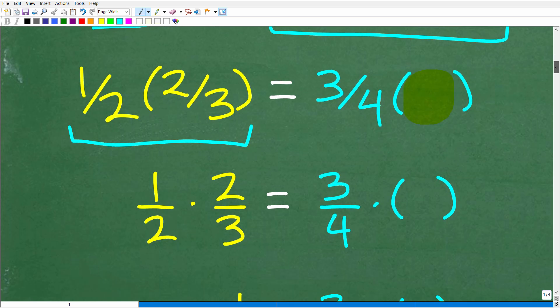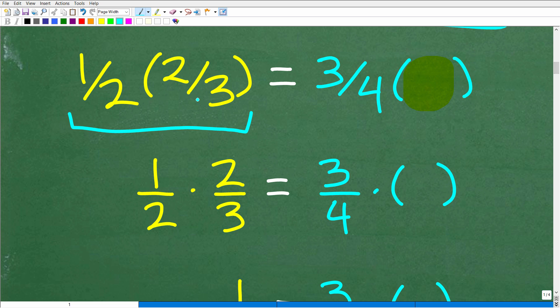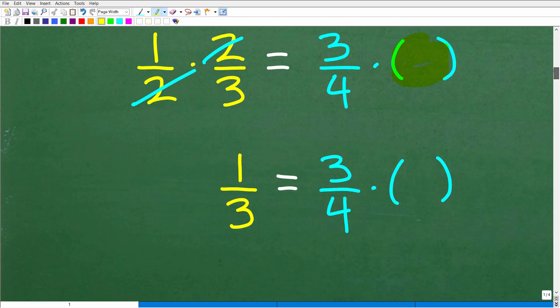All right, so now let's go ahead and get going here. 1 half times 2 thirds, so 1 half of 2 thirds is this, but 1 half times 2 thirds is 1 half times 2 thirds. We can write these fractions this way. We could cross-cancel these twos is the same as 3 fourths times some number. We don't know this, but what we're going to do is clean this problem up. So 1 half times 2 thirds is 1 third. So 1 third is equal to 3 fourths times some number.